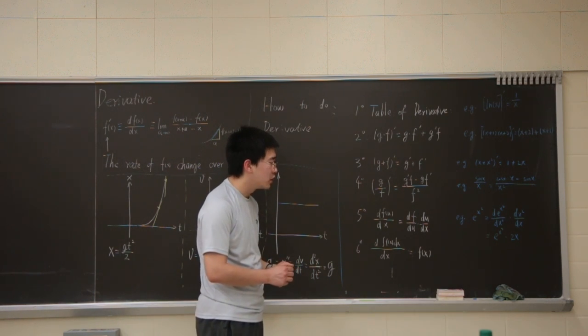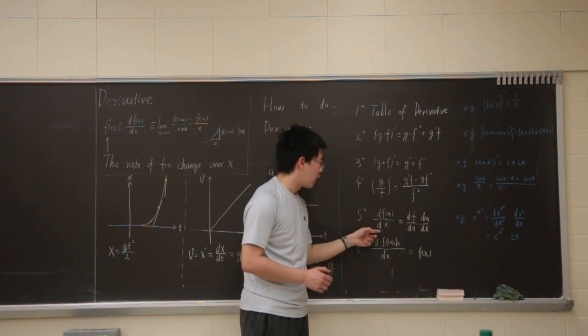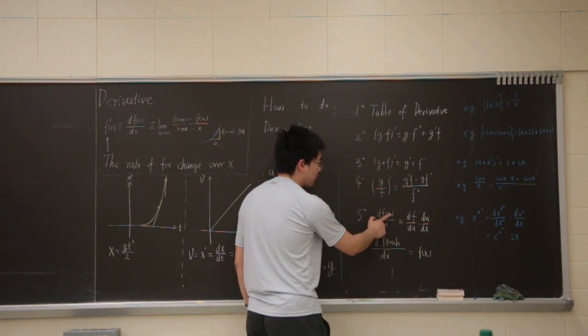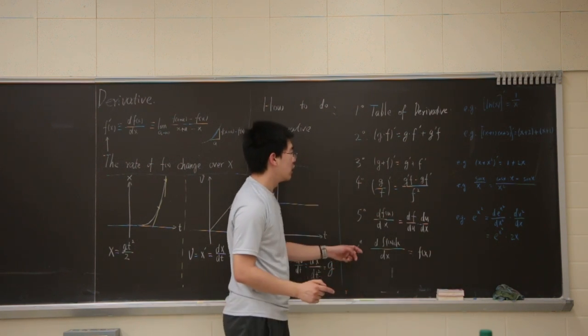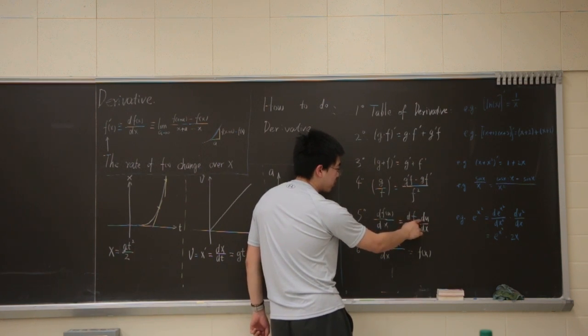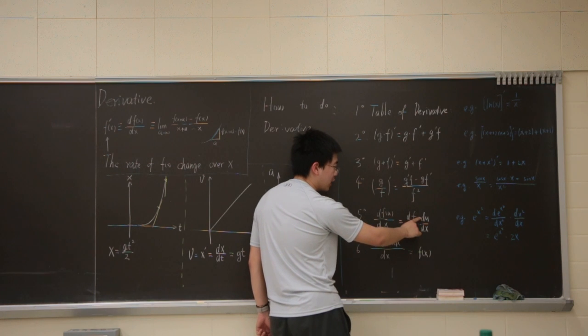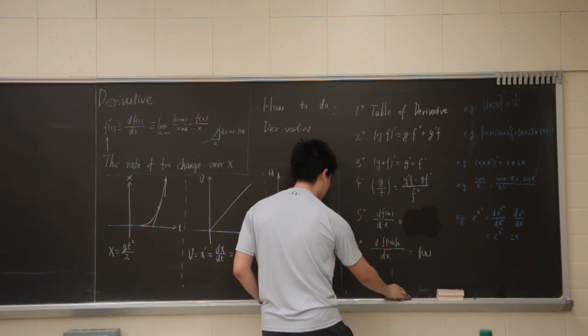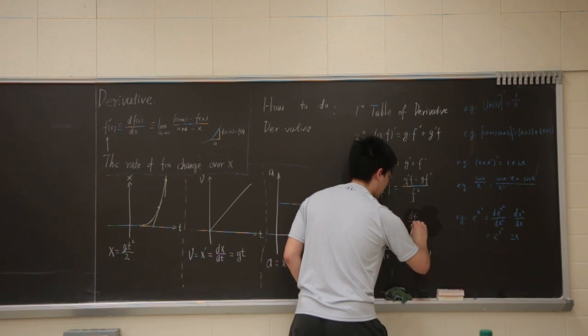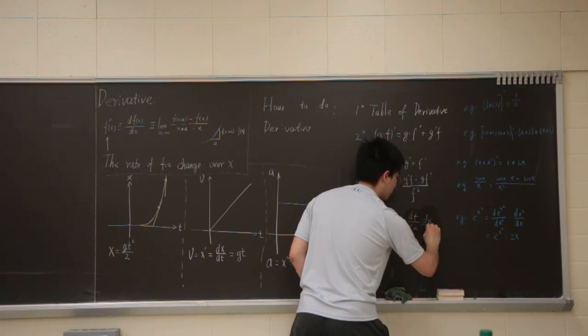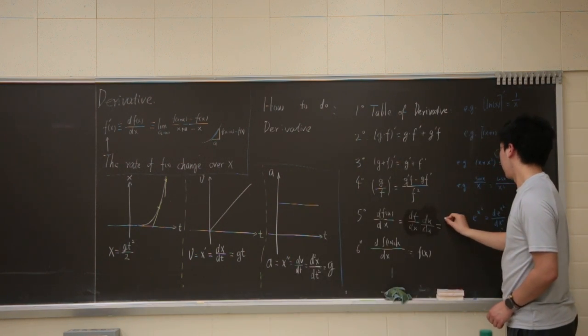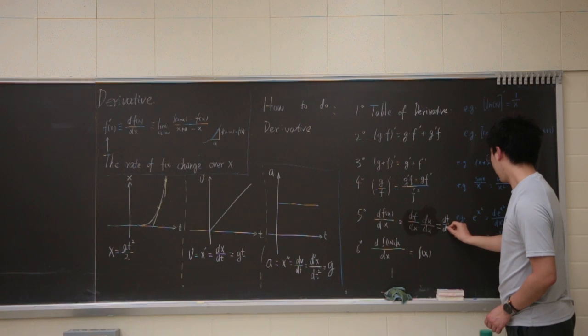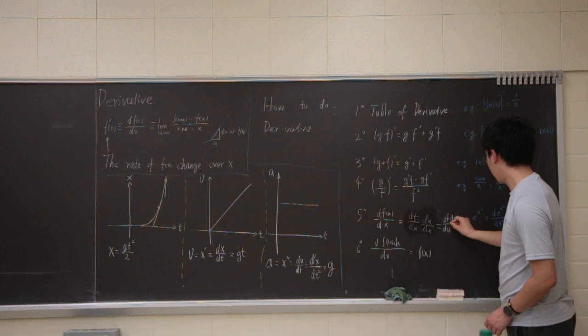And here is one of the hardest one, which is basically, if we have a function f is a function of u, and u is a function of x, then you, pretty much, you can think you multiply this whole thing by one, and one can be written as du over du. Let me rewrite this. Okay. Du over du. And you can write it, then you just move it around, this move here, and this move there. df du, du dx.